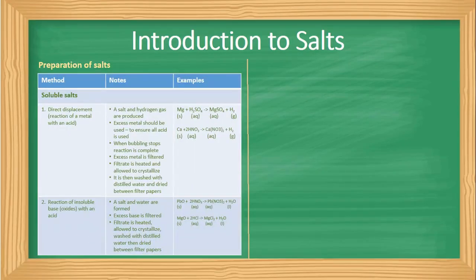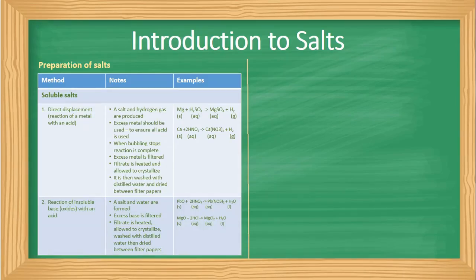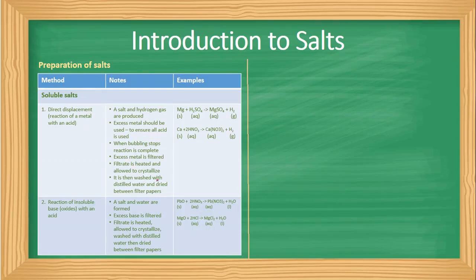Now let us look at preparation of salts. Solubility determines the method used to prepare salts. There are five ways to prepare soluble salts. The first is direct displacement — a metal is reacted with an acid. The hydrogen in the acid is displaced by the metal, producing a salt and hydrogen gas. Excess metal is always used to ensure all acid is used up. When bubbling stops, the reaction is complete.